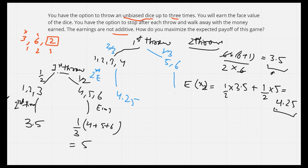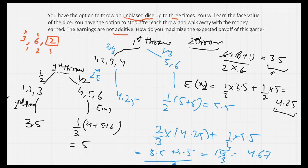So what is my expected value? E(3) = 2/3 × 4.25 + 1/3 × 5.5. This is 8.5/3 + 5.5/3 = 14/3 ≈ 4.67. Since we had to maximize the expected payoff, taking these decisions was important.